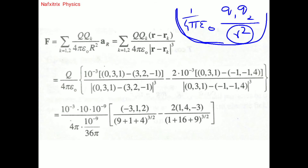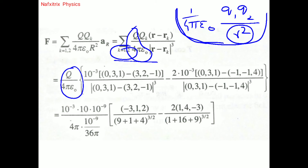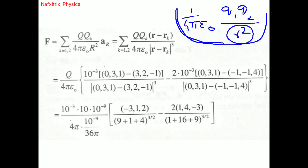Now we substitute all the values from the question into the formula. Since there are two charges, k equals 1 and 2. The term q / 4πε₀ is common and taken aside. For the first charge, we compute r − r1.